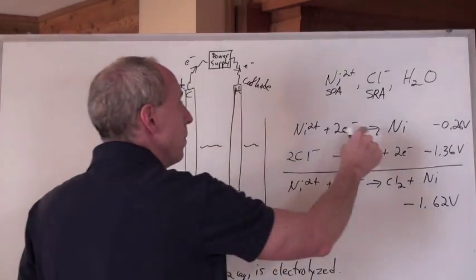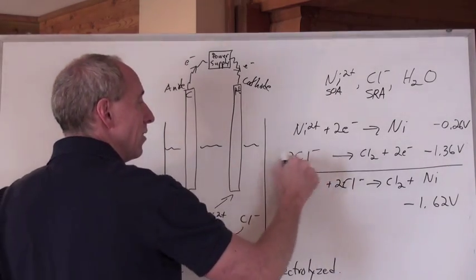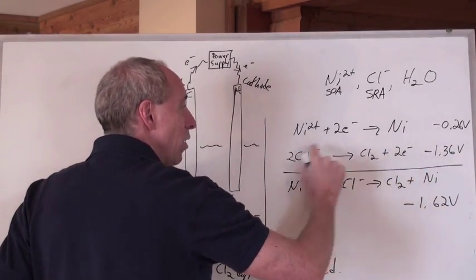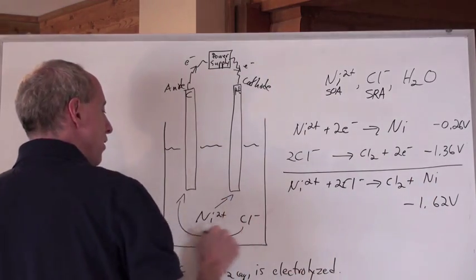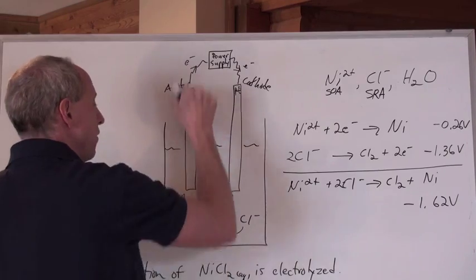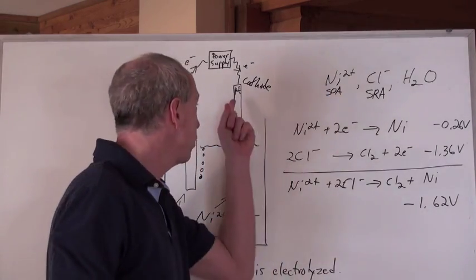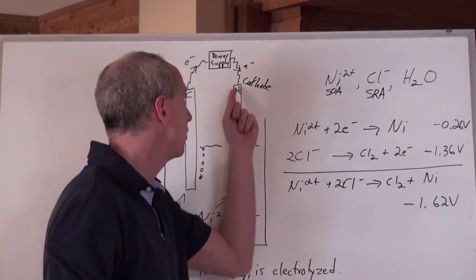And what's going to happen, the chloride ion is going to migrate over here because it's reacting at the anode, because that's oxidation, and the chloride ion is going to turn to chlorine gas here, and you're going to get bubbles come off of here, of chlorine gas. And you're going to get nickel plating occur at this electrode.